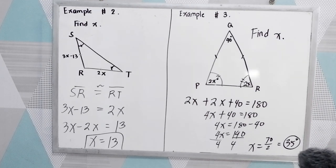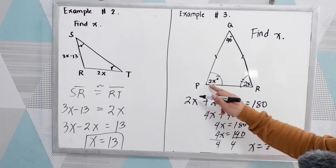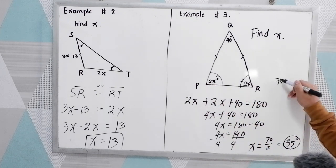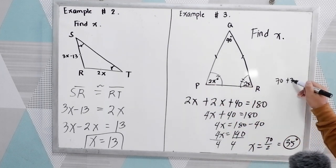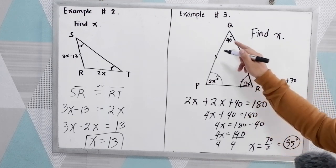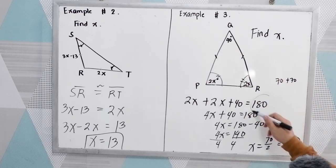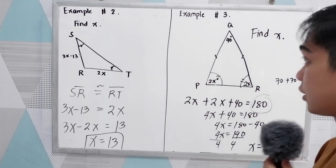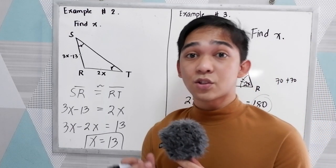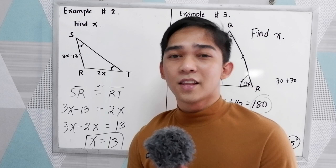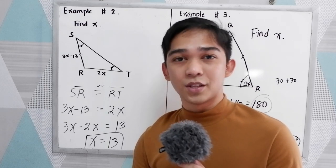If you want to substitute, then we have 2 times 35, 70 plus 70. That is 140, plus 40, 180. So correct. X is 35 degrees. So that is the isosceles triangle. Thank you for watching Senior Pablo TV.